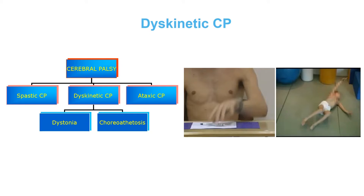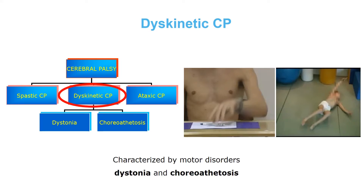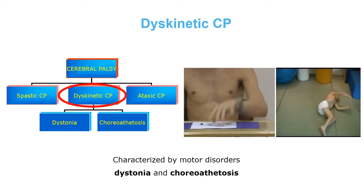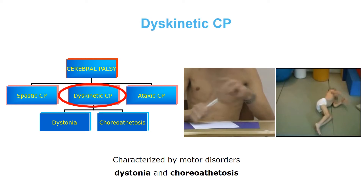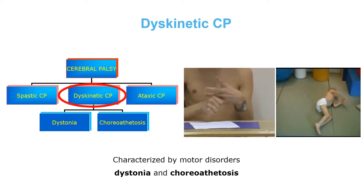We know that dyskinetic CP is the second largest group after spastic CP and is characterized by dystonia and chorioathetosis. Dystonia is often more pronounced and severe than chorioathetosis, with a major impact on functioning, quality of life, and societal participation.